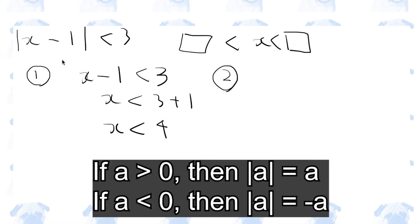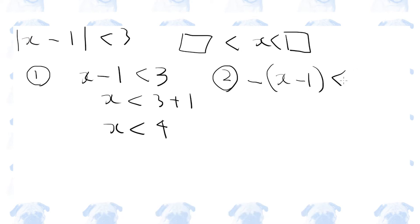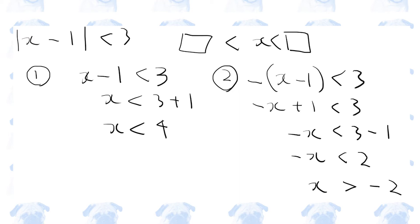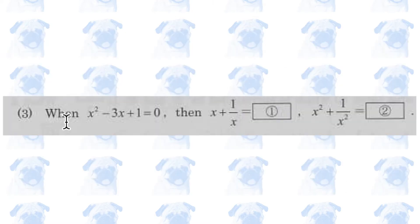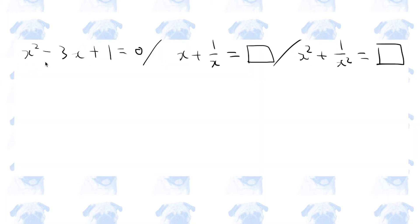Let's assume that x minus 1 is a negative number, in which case we need to add the minus sign before it. This tells us that x must be greater than minus 2. So the range of x that satisfies this inequality is x is greater than minus 2 but smaller than 4.